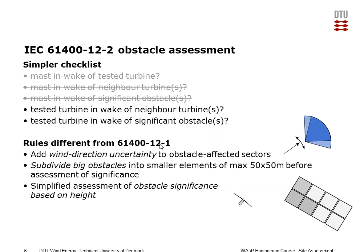That also means the checklist of the wake assessments is simpler because you don't have the mast. The measurement sectors are different because you need to add something to the wake-affected sector, and that is related to the uncertainty of the direction measurements and also maybe the yaw misalignment of the nacelle when you are doing the measurements.